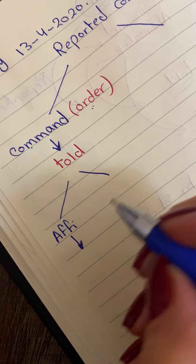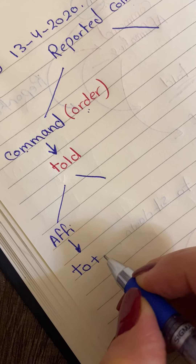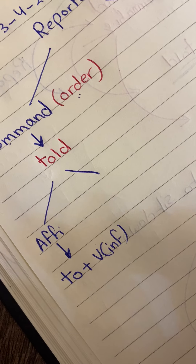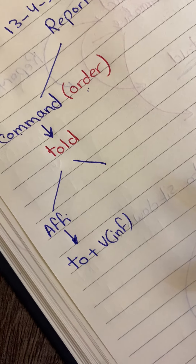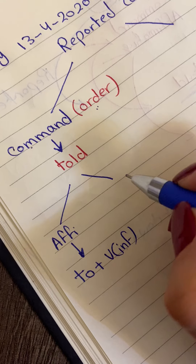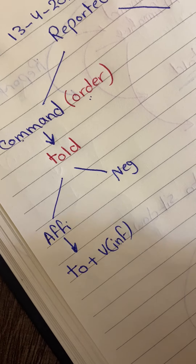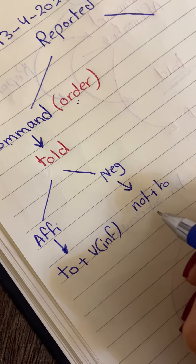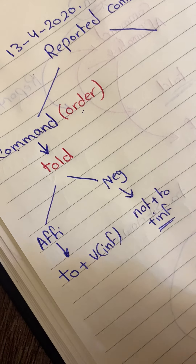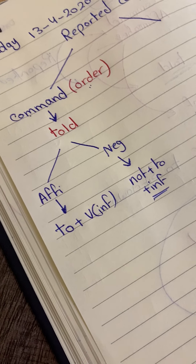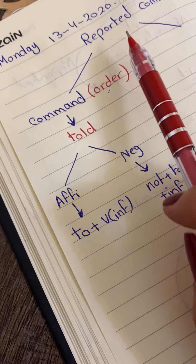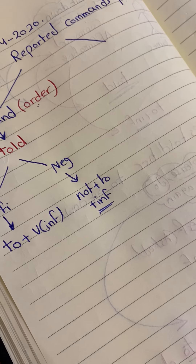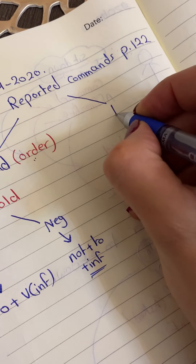We have two cases: if the command is affirmative, we add 'to' and change the verb to the infinitive. But if the command is negative, we use 'not plus to plus the infinitive verb'. This is the most important thing in reported commands. Our lesson today is about the second part, which we call a request.